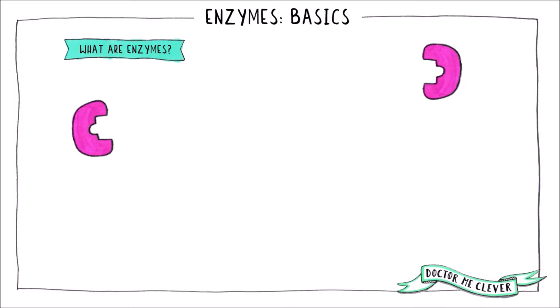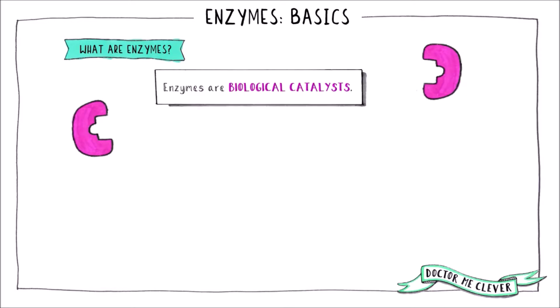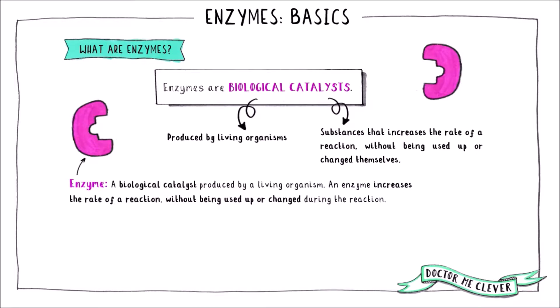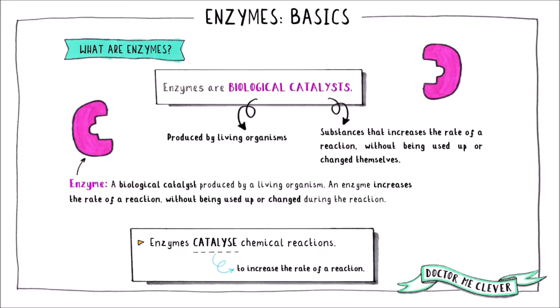So what is an enzyme? Enzymes are biological catalysts. They're biological because they're produced by living organisms, and they're catalysts because they increase the rate of reactions without being used up or permanently changed themselves. So an enzyme is a biological catalyst produced by living organisms that can increase the rate of a reaction without being used up or changed during the reaction. We can say that enzymes catalyse reactions.